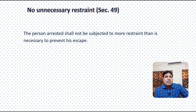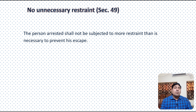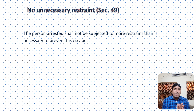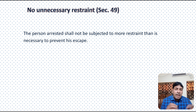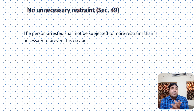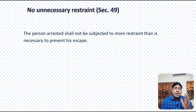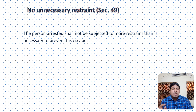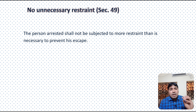Section 49 deals with No Unnecessary Restraint. The person arrested shall not be subjected to more restraint than is necessary to prevent his escape. Implicitly, the provision of handcuffing is present under Section 49. Kisi bhi tarike ka unnecessary restraint accused par nahi lagaya ja sakta — accused ko bandh karke nahi rakha ja sakta, handcuffs nahi pahnaaye ja sakte. Agar lage ki accused bhaag sakta hai, us situation mein kuch restraint lagaaya ja sakta hai, but unnecessarily — jaise ek handicapped offender ko — handcuffs nahi pahnaaye ja sakte. Section 49 ne isko mana kiya hai.